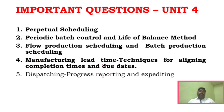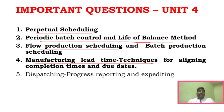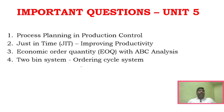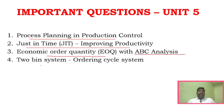For Unit 4, manufacturing lead time techniques are the most important key areas. The dispatching process, reporting, and follow-up are also important. For Unit 5, the key questions are process planning in production control, just-in-time analysis, ABC analysis, economic order quantity, two-bin system, and operating cycle system — confirm these four questions.